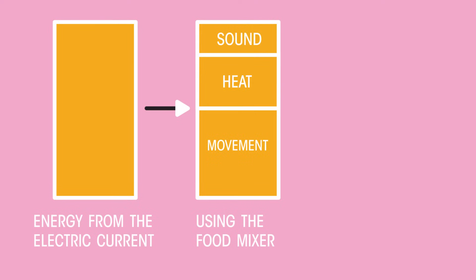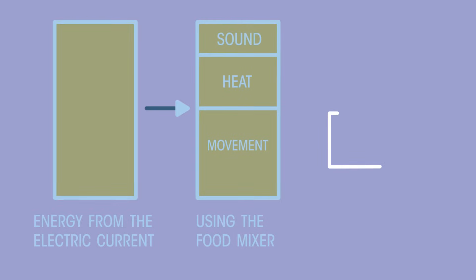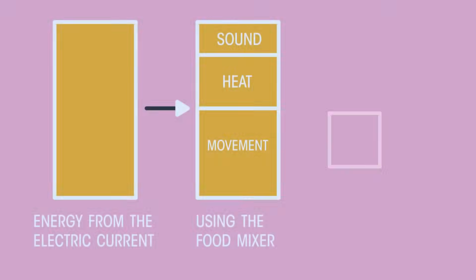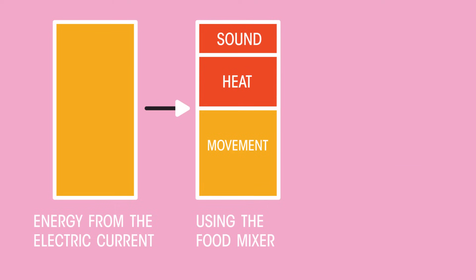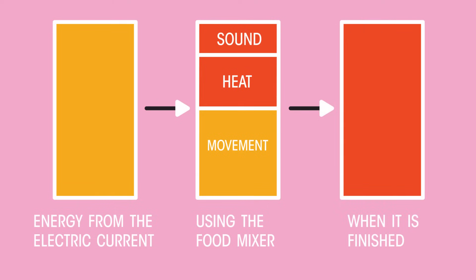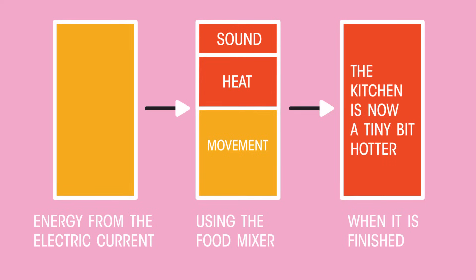The mixer and the food also get hot. Which of these energies is useful? Clearly, only the movement is useful — the sound and heat are wasted energy. And once the food is mixed, where is the energy now? It's been scattered, as the sound is absorbed by the walls making them a tiny bit hotter.